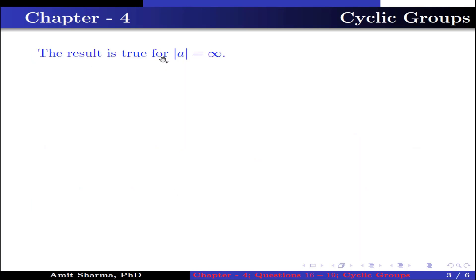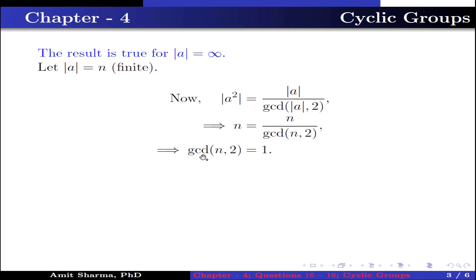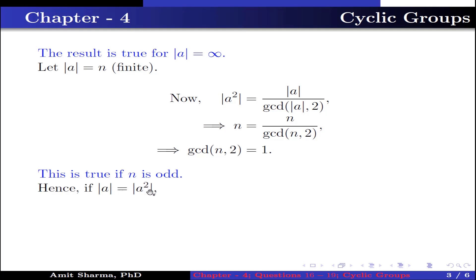This result is true when the order of a is infinity, because if the order of a is infinite, the order of a² cannot be finite. Now let the order of a be n, which is finite. We know that the order of a² equals the order of a divided by gcd(order of a, 2). This implies n = n / gcd(n, 2), which further implies gcd(n, 2) = 1. This is true only when n is an odd number. Hence, if the order of a equals the order of a², then the order of a must be odd or infinite.